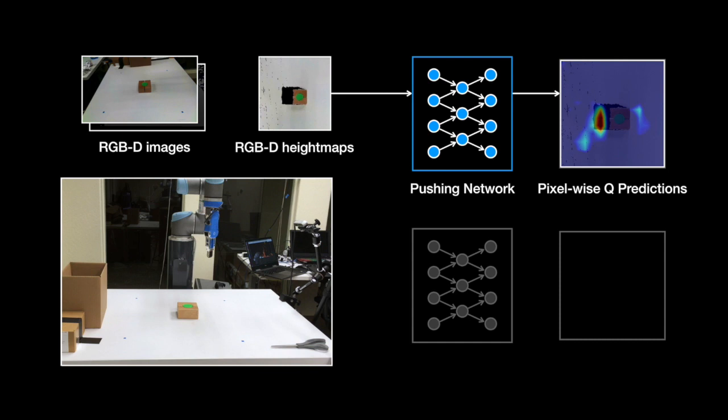Here, they are visualized as a heat map, where hotter regions indicate higher Q values. Each pixel location represents a physical push 10 cm to the right of the height map, starting at that point in the scene.